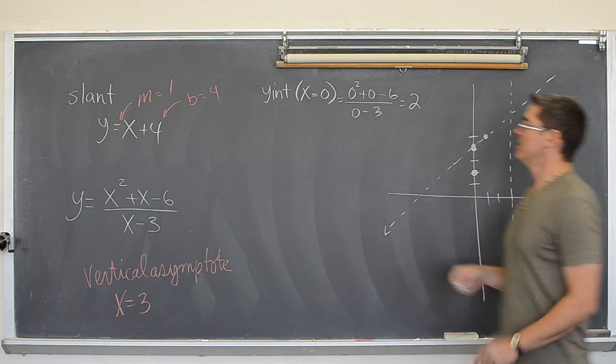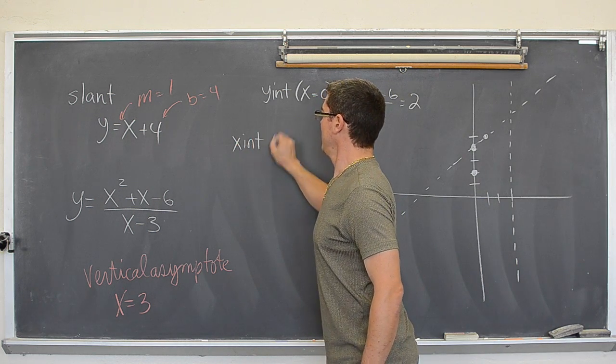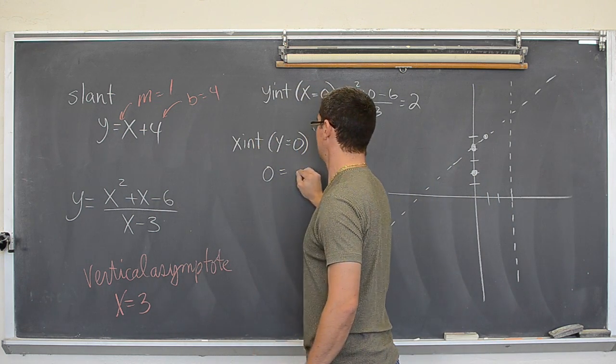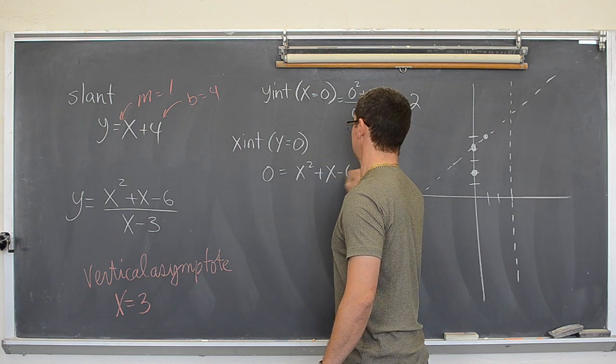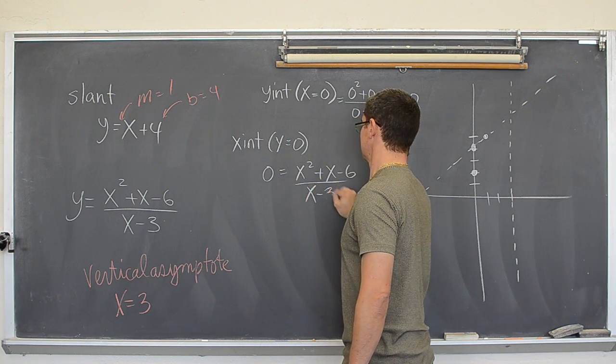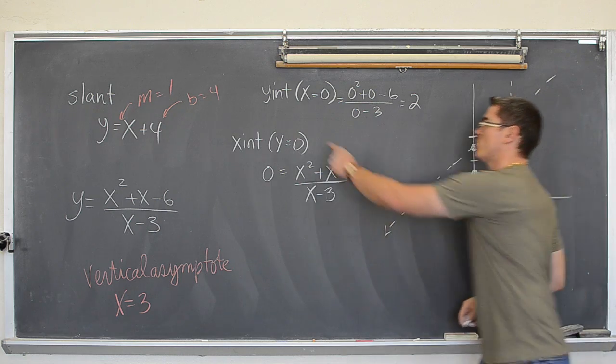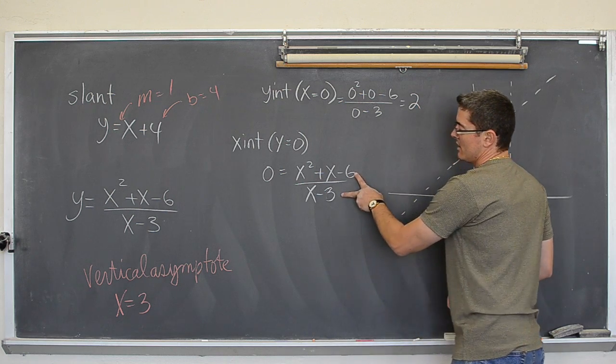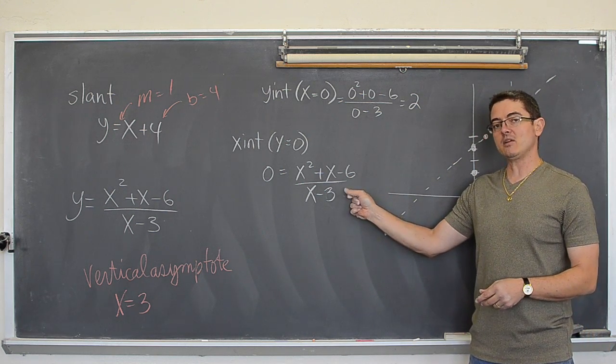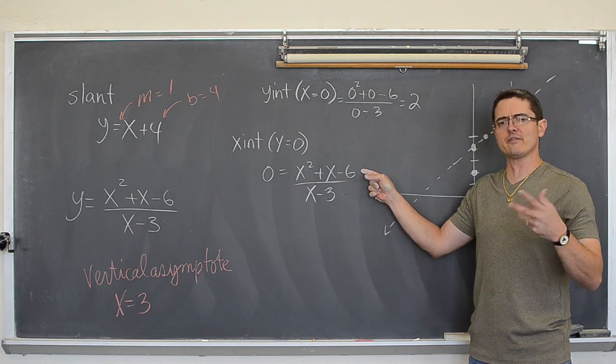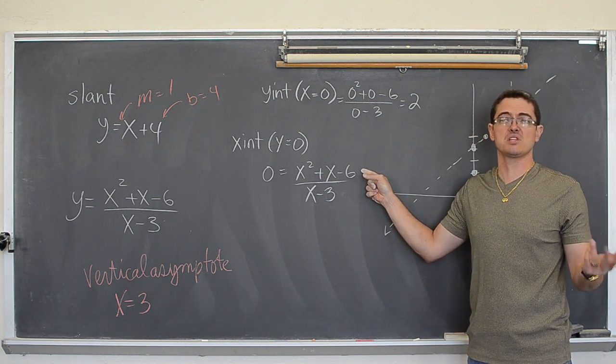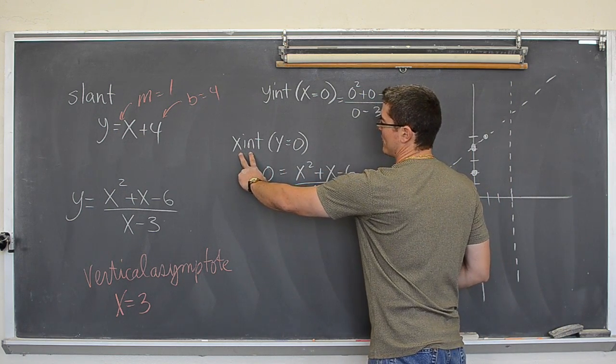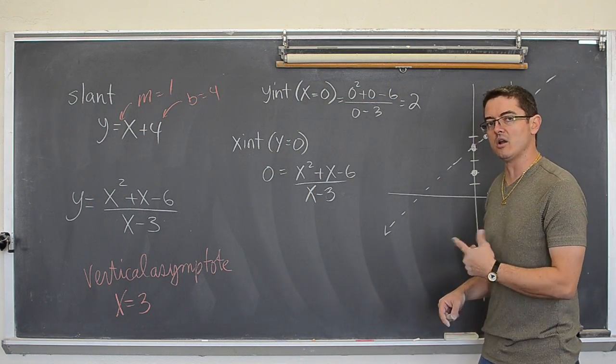Alright. Let's find the x intercept. The x intercept is when y equals 0. So, when is this function going to equal 0? When is y going to be 0? What does x have to be to make this entire function equal to 0? Well, let's talk about fractions for a second. I do not want the bottom to equal 0. But if the top equals 0, 0 divided by 10 is 0. 0 divided by 5 is 0. 0 divided by 100 is 0.